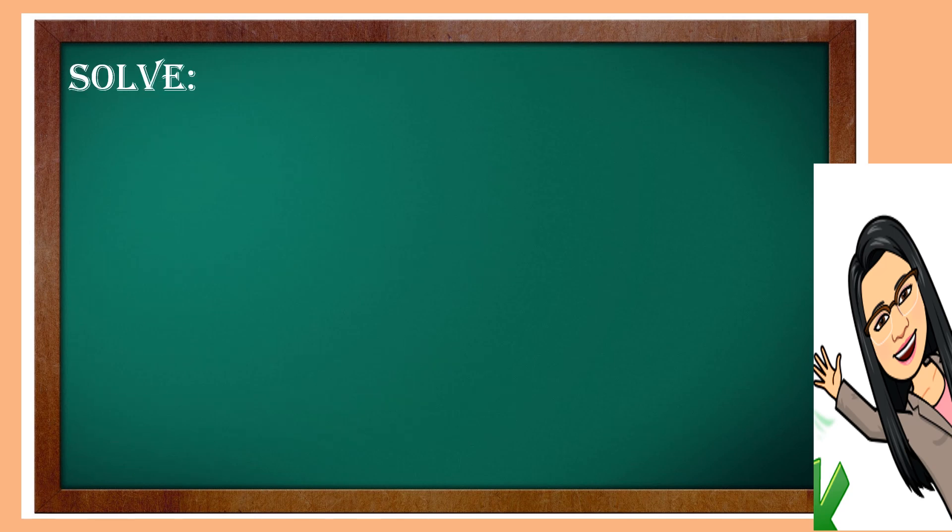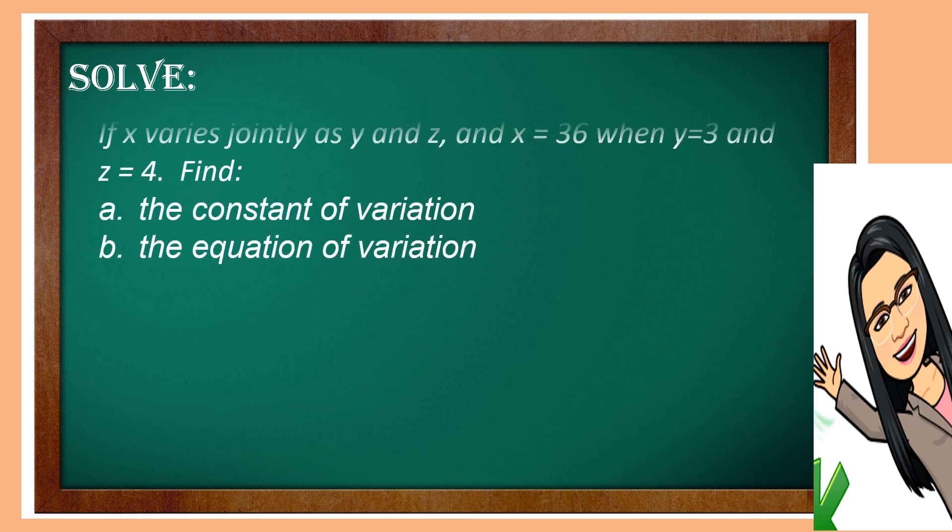If you master the translation of phrases into symbols, you can now solve problems. Let us study Example 1. If X varies jointly as Y and Z, and X equals 36 when Y equals 3 and Z equals 4. Find: A, the constant of variation, and B, the equation of variation.